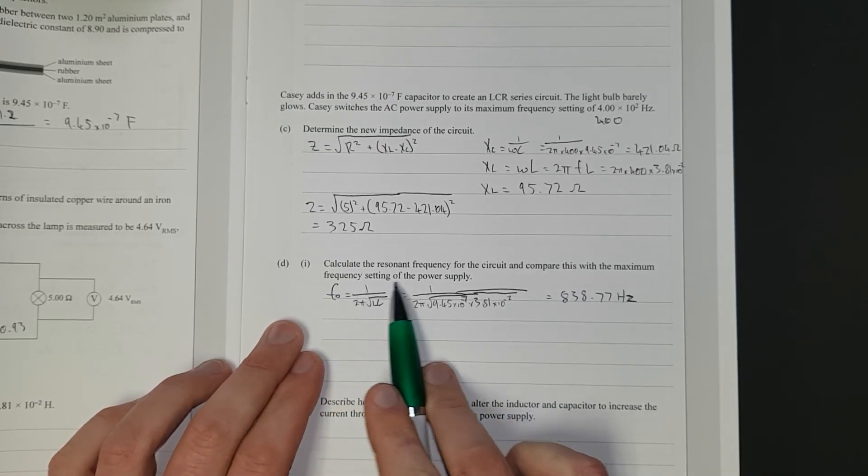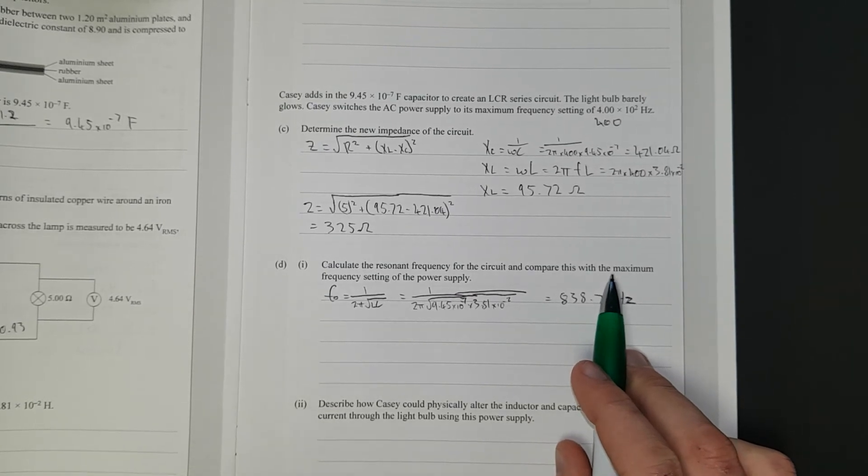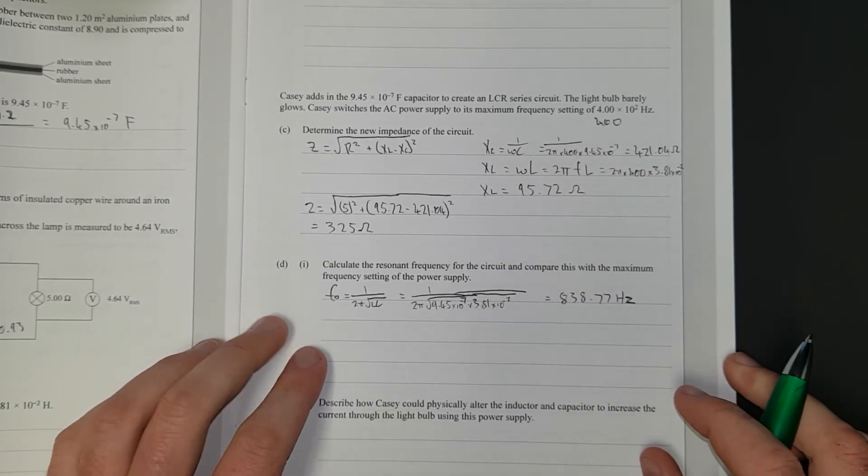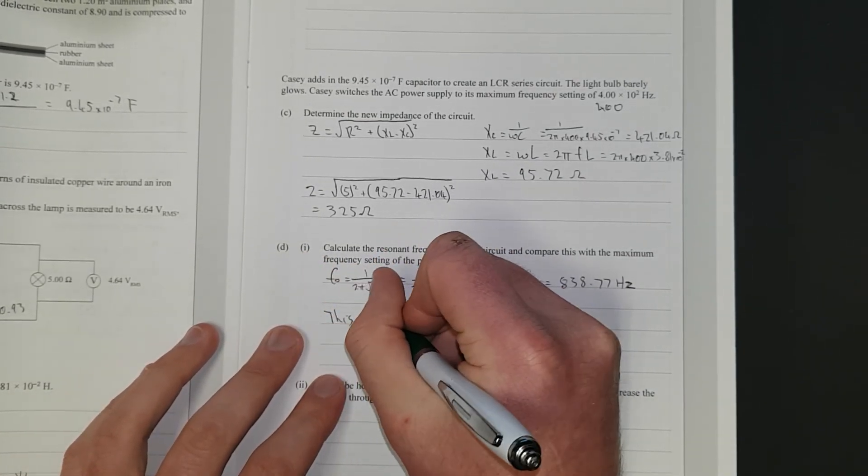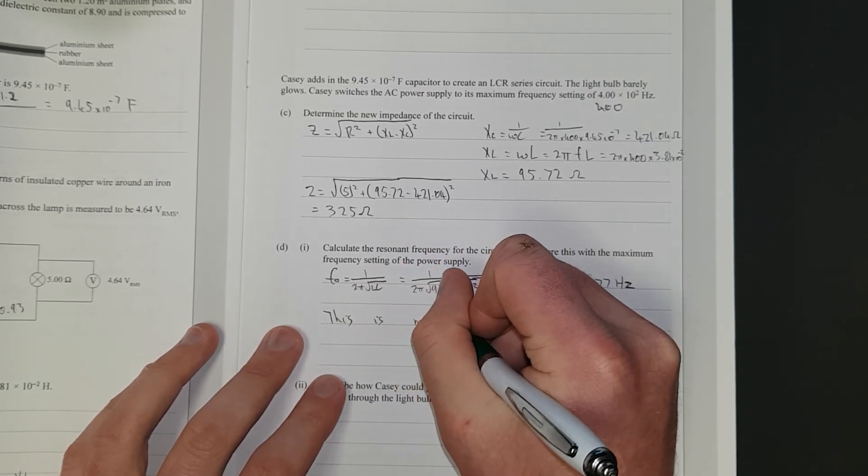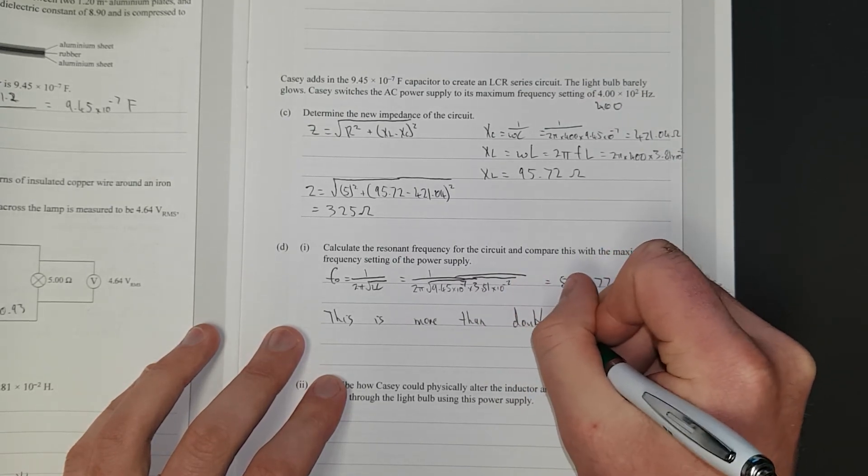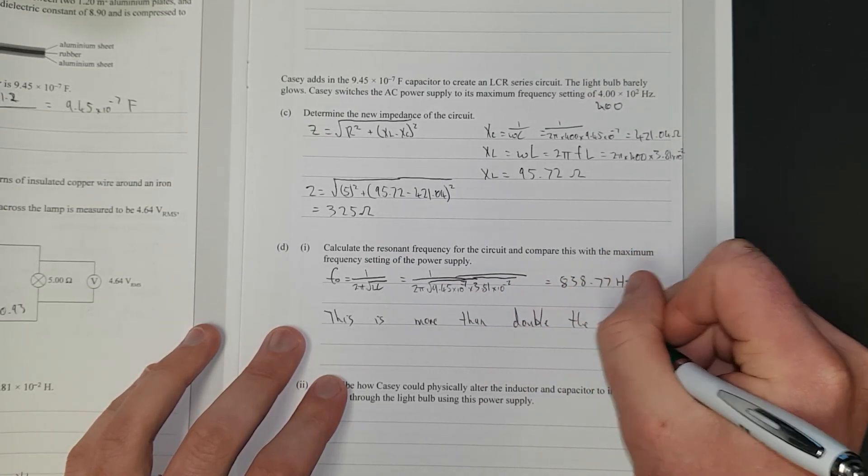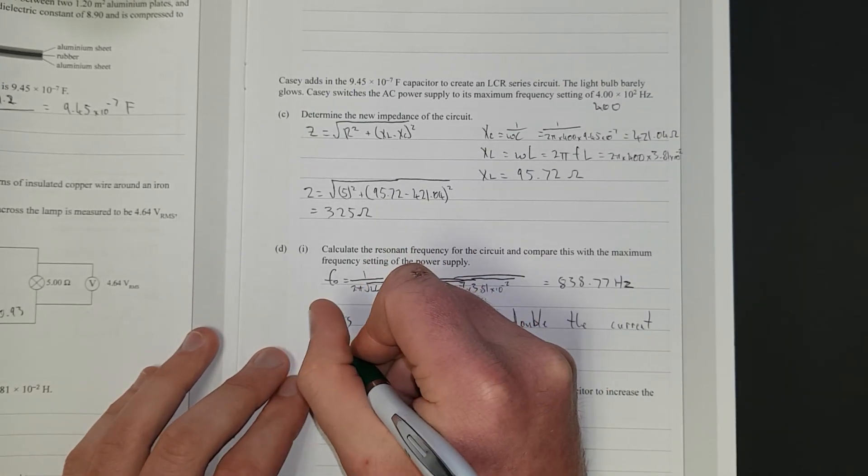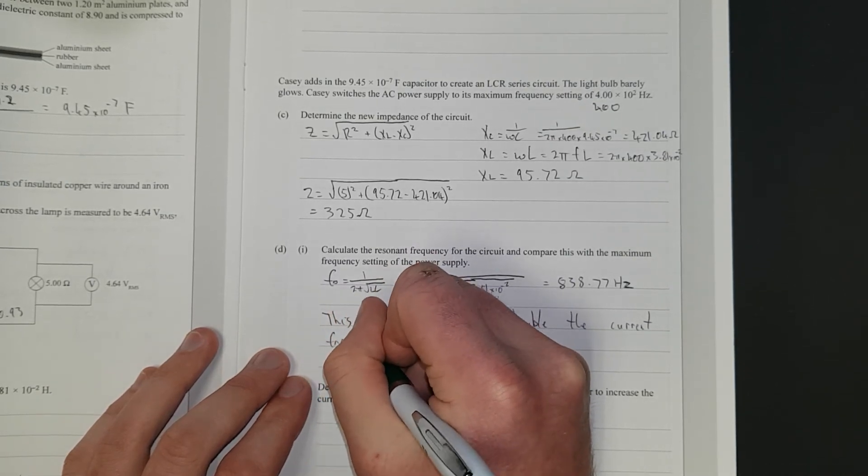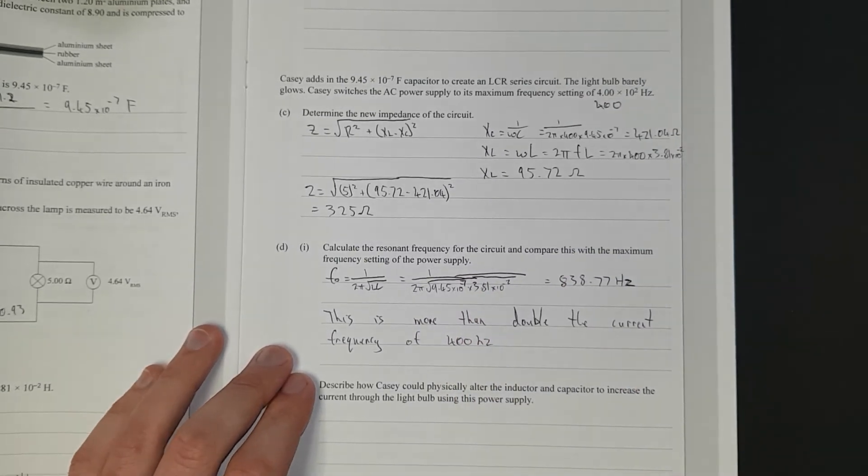And compare this with the maximum frequency setting of the power supply. If you didn't compare this I reckon they wouldn't give you the mark. Whatever, it's level 3, it's meant to stop people that can't do English and math good. This is more than double. It's originally 400, the current frequency of 400 obviously because it's 838.